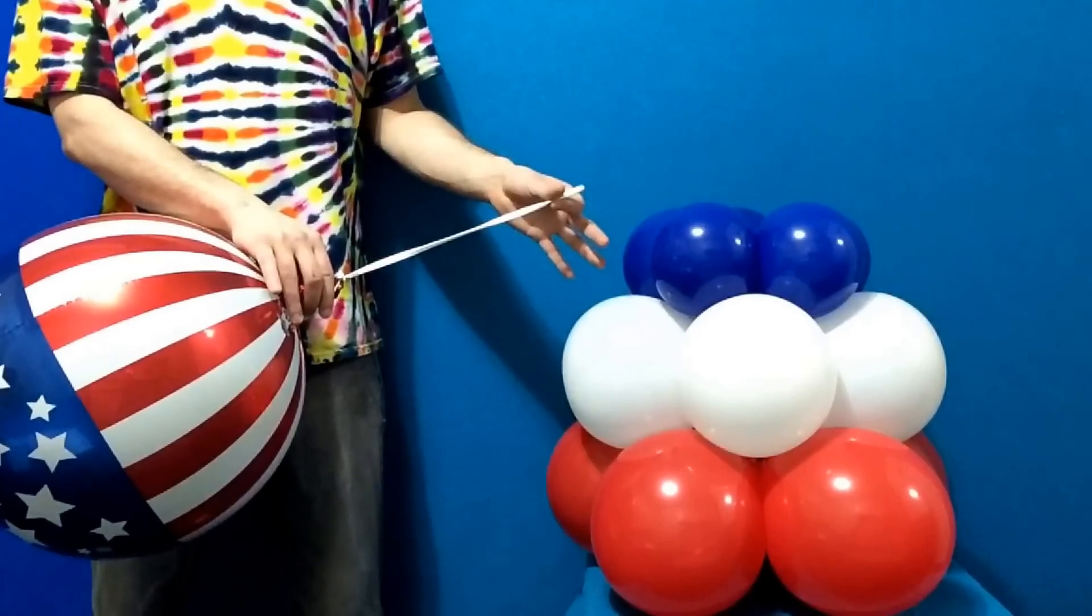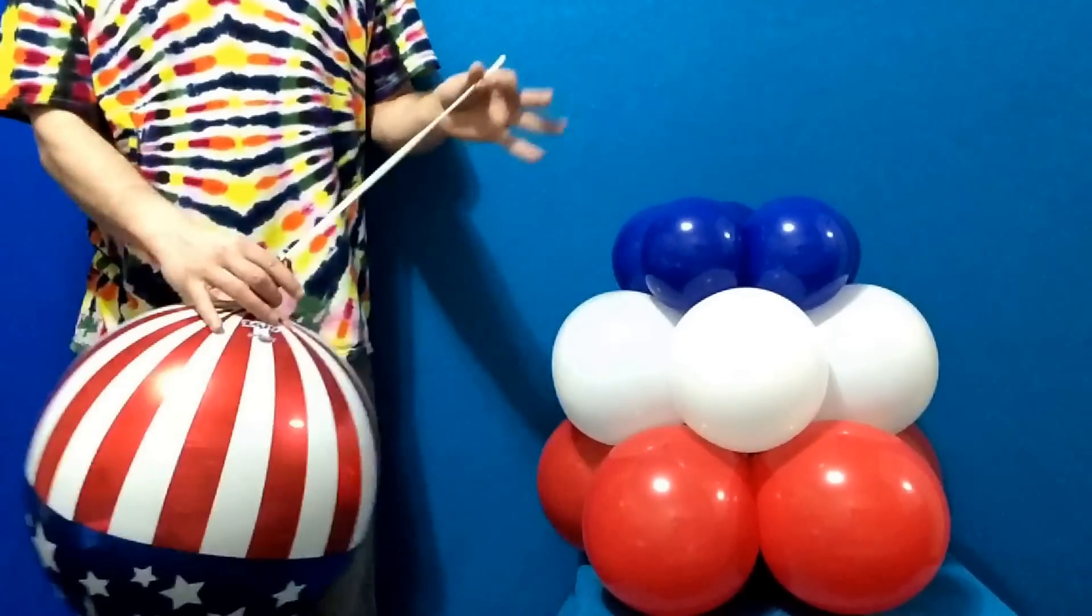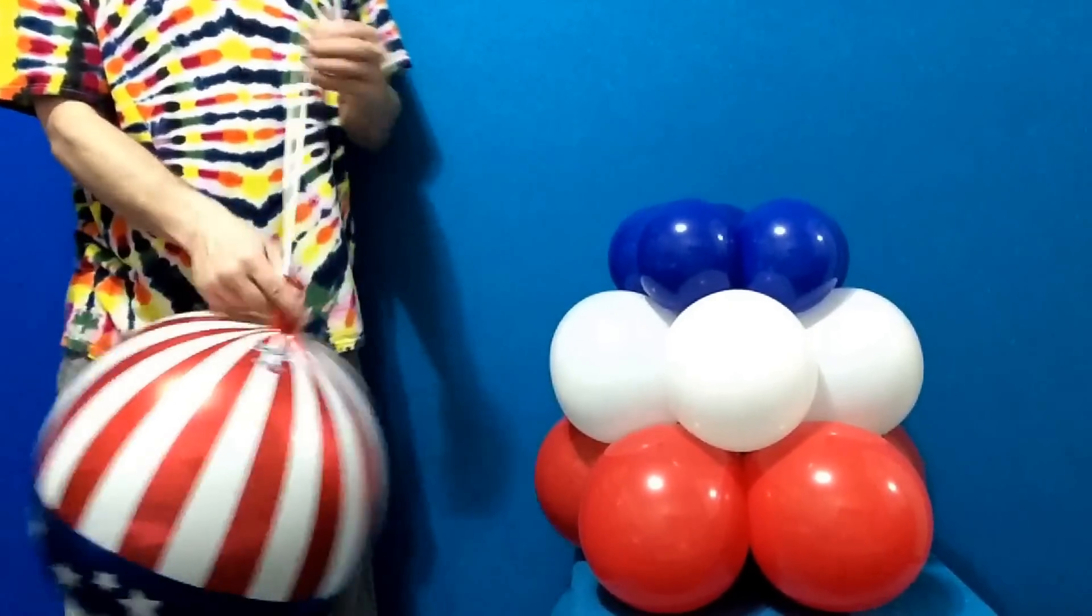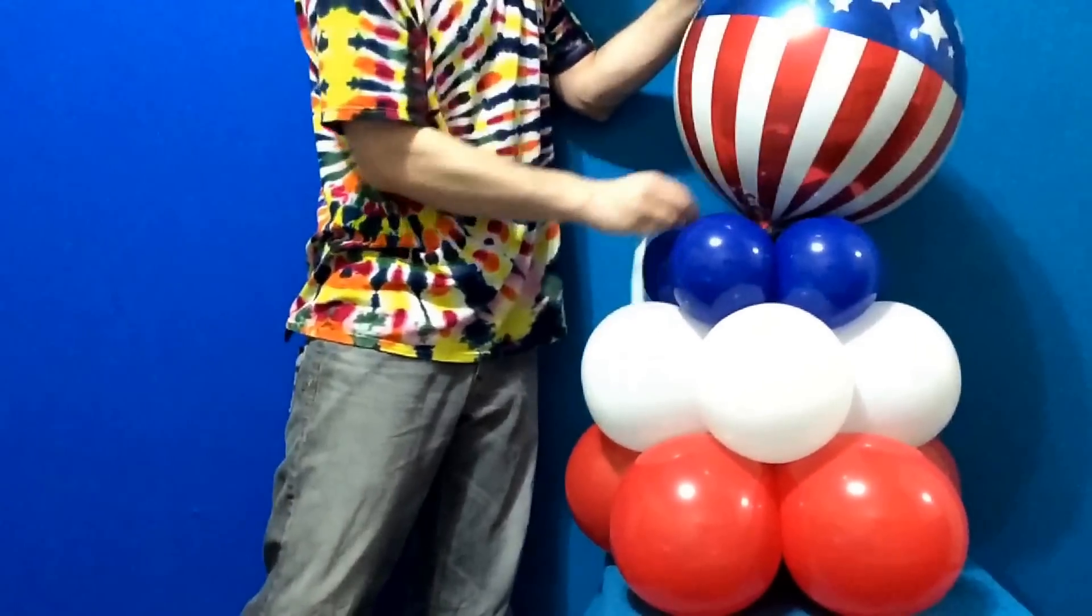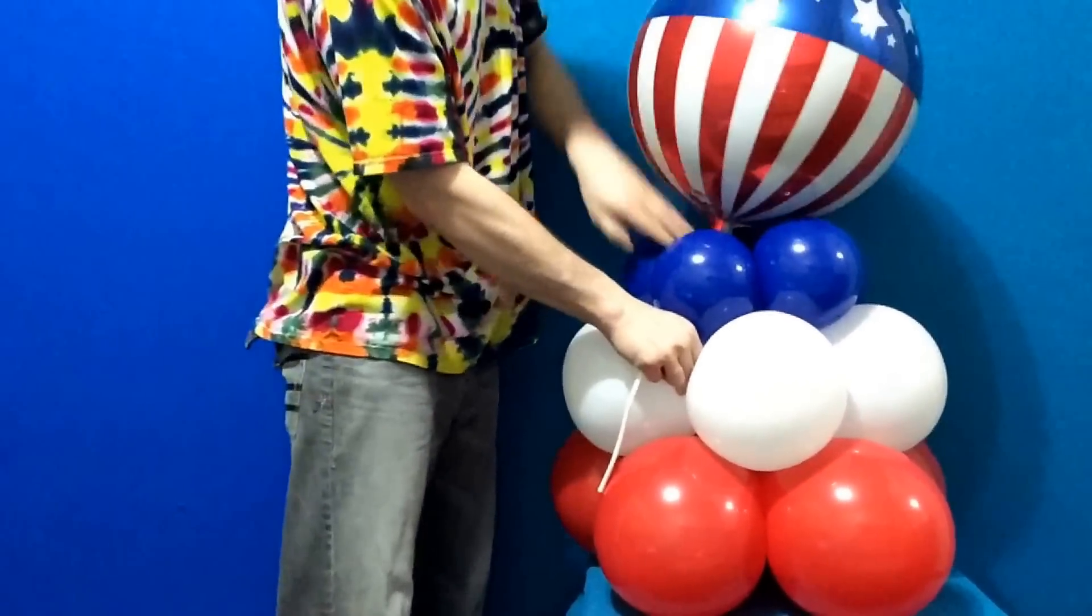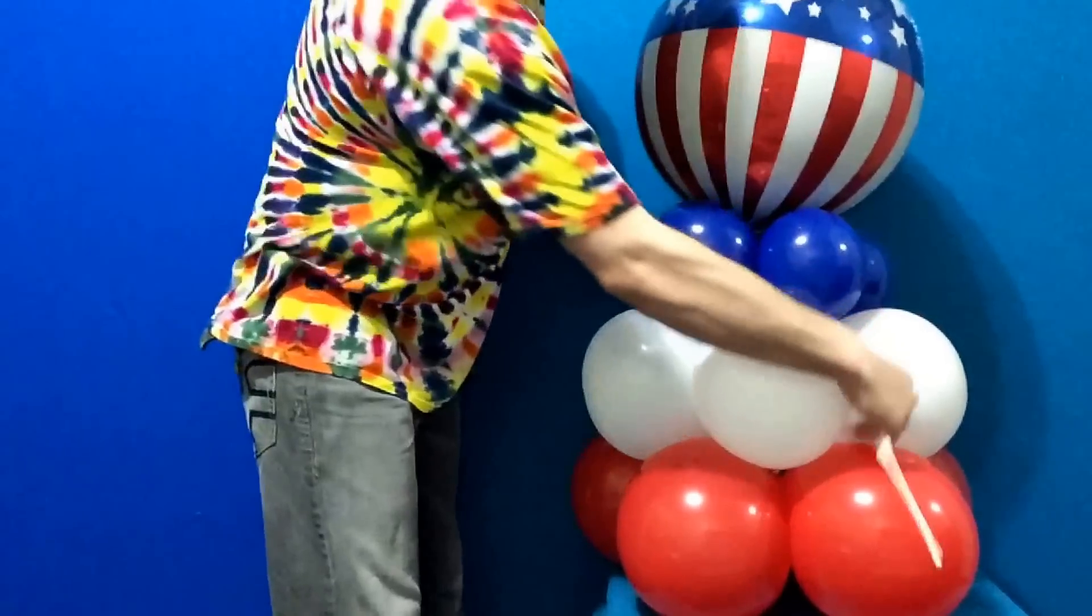Tie another spare 260 to the Stars and Stripes Mylar nozzle at the bottom. Pull straight down as in position, securing your printed top.